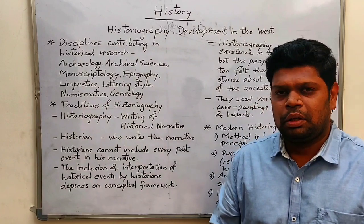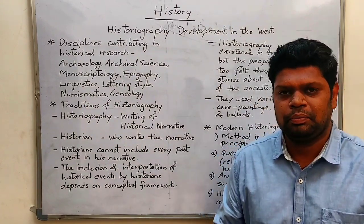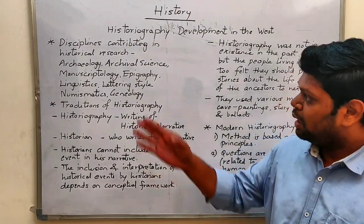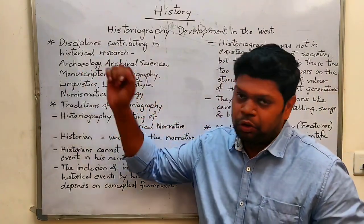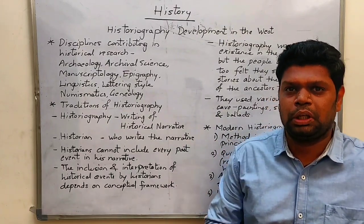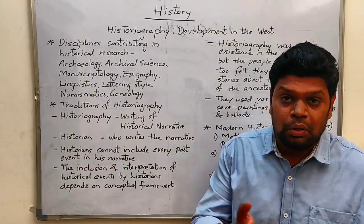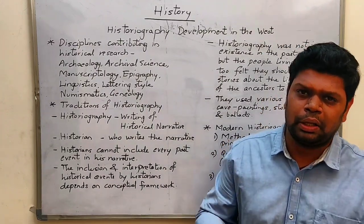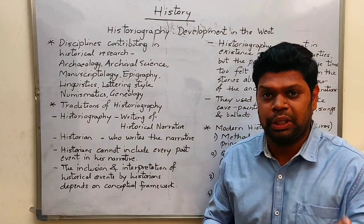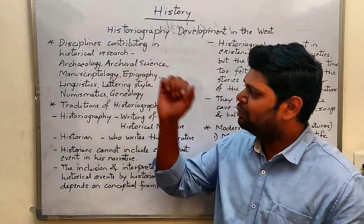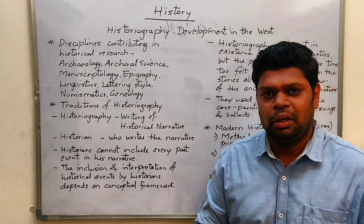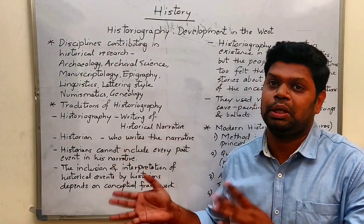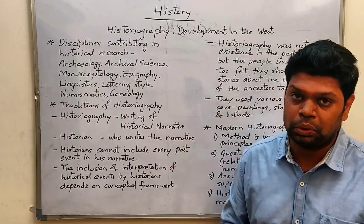Which disciplines help in historical research? First, archaeology — when we try to find historical monuments or documents from different places, we verify those details through archaeology. Archival science means keeping details and documents properly and using those documents from time to time. This plays a very important role in historical research.